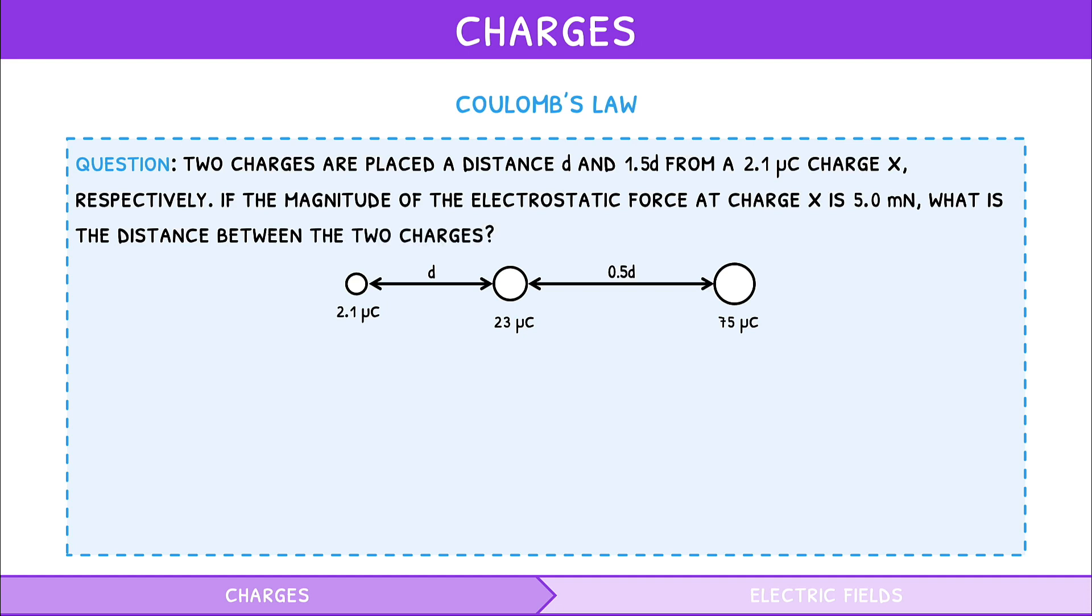The resultant force at point x is the sum of the forces from both charges. So, the total force is equal to force 1 plus force 2. For force 1 and force 2, the equation is, electrostatic force equals the Coulomb constant times charge 1 times charge 2 divided by distance squared. We substitute in the values of the Coulomb constant, charge 1 and charge x to find force 1. Then the values of the Coulomb constant, charge 2 and charge x and 1.5 d for force 2.